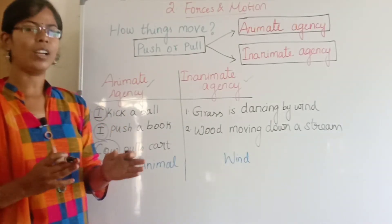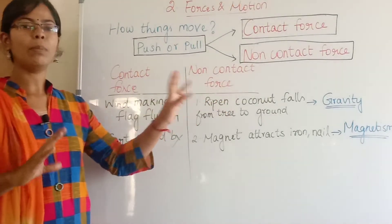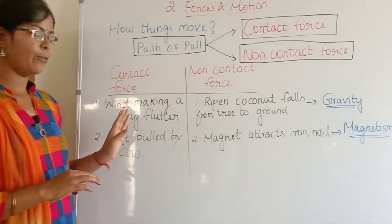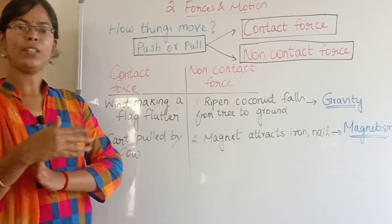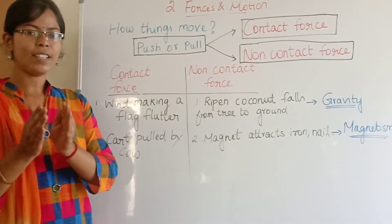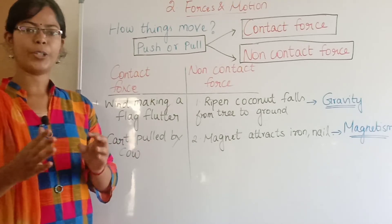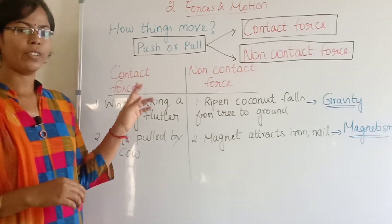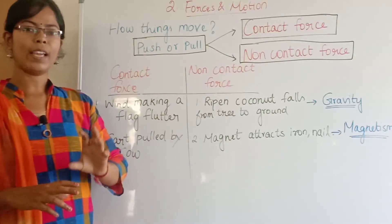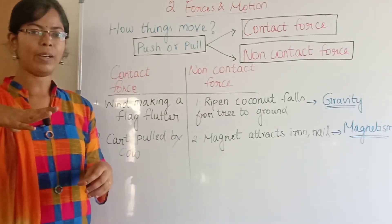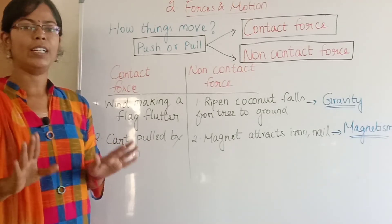Now let's see the difference between contact force and non-contact force. In contact force, the force is applied by direct physical contact — for example, wind making a flag flutter, or a cart being pulled by a rope. A ripe coconut falling from a tree to the ground is caused by gravity, and that is a non-contact force.